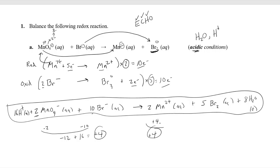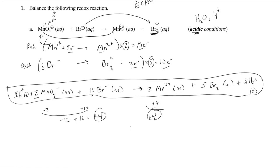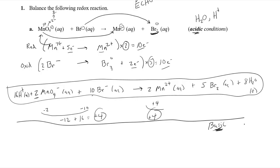Now let's see how to balance this under basic conditions. Instead of adding H⁺, we'd add OH⁻. Under basic conditions, you have lots of water and lots of OH⁻ around. We don't need to start over from the beginning — we can go back to the point just before we added the acid, after the electron balancing step.